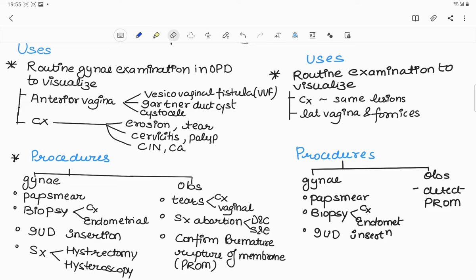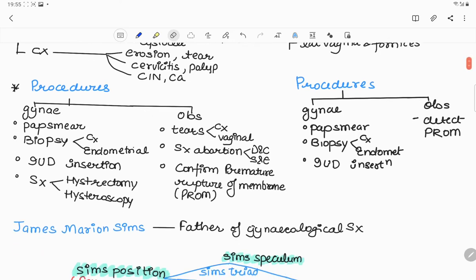Cusco's is used for routine examination to visualize the cervix, same lesions as described earlier, lateral vagina, and fornices. Gynecological procedures are same as discussed like Pap smear, biopsies, and during intrauterine device insertions, and in obstetrics to detect premature rupture of membrane.